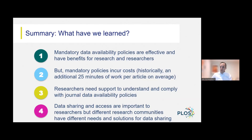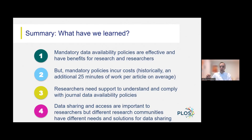Historically at PLOS, it is about 25 minutes of extra work per article we publish on average to implement our data availability policy, and one of our challenges is working to increase the efficiency with which we can continue to do that. It's also clear that researchers need support to understand and comply with journal data availability policies. Our guidelines on our website are very highly accessed, and we have gone through multiple revisions to the guidelines we provide to authors.